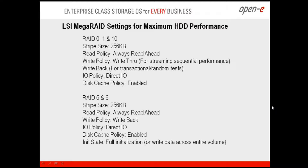These are the settings that LSI recommends for RAID 0, RAID 1, and RAID 10. The typical basic settings are: stripe size set to 256. I'll be able to provide you this information as well — after the session, I can either send it through the chat window or you can email me and I'll provide it. So the stripe size they recommend is 256.